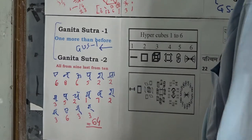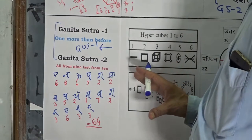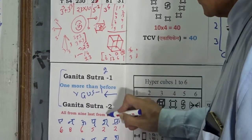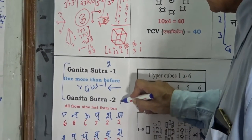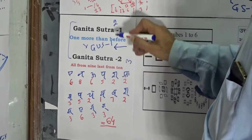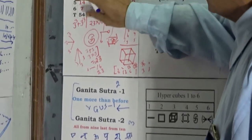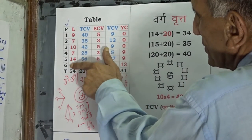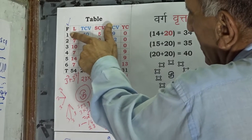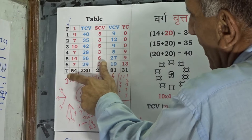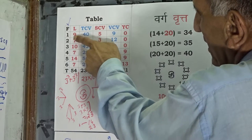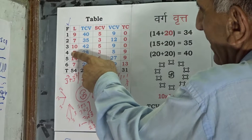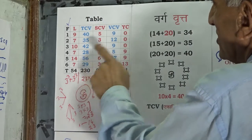Let us now revisit these six formulations. Two formulations of Ganita Sutra 1, one formulation of Ganita Upsutra 1, and three formulations of Ganita Sutra 2. Let us draw this table — F means formulation. In the first column, serial numbers 1 to 6: 1 is Eka Adhiken, 2 is Purven, 3 is Anurupen, 4 is Niklim, 5 is Navasthacharamam Dashyata, and 6 is Dashata.